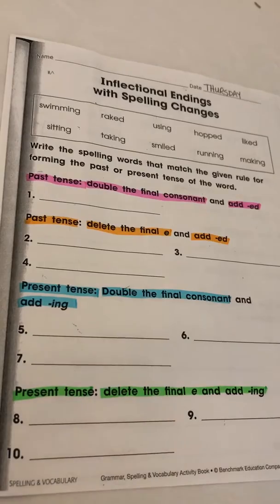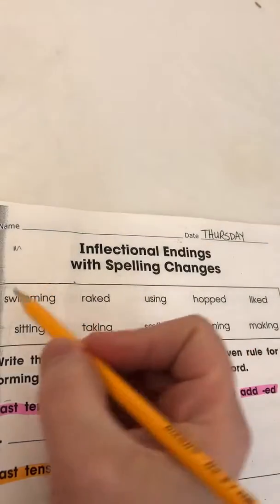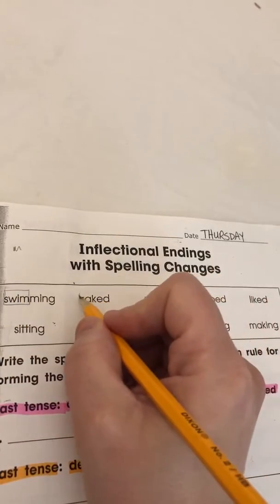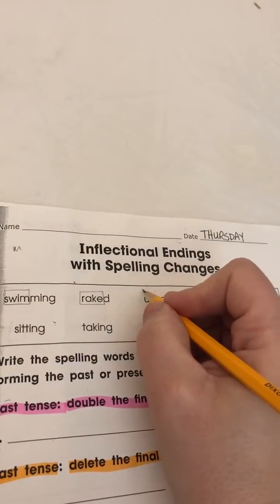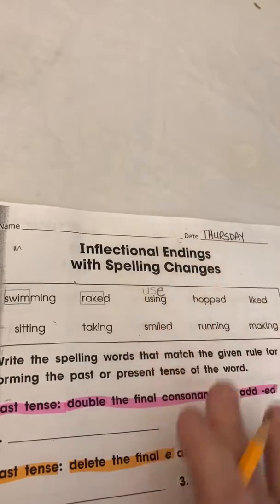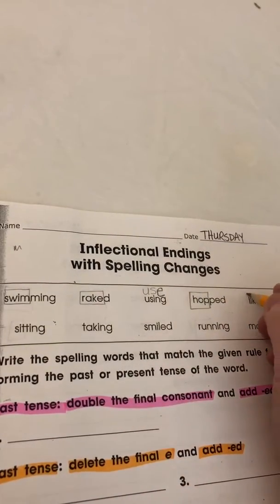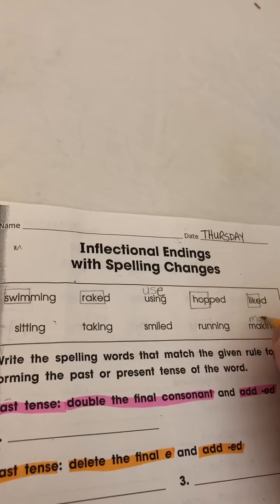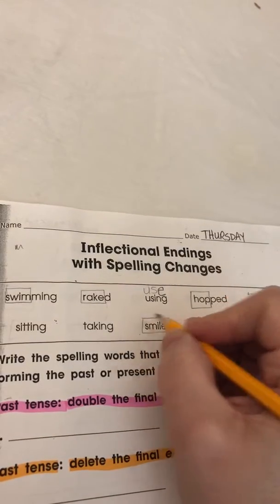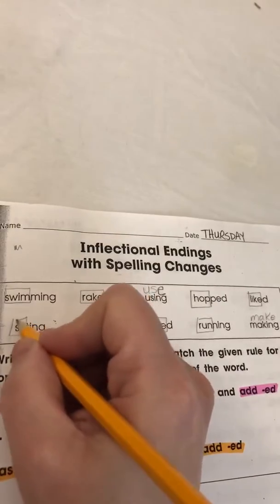What is helpful during this is to look at these words and figure out what the root word is. So I'm just going to box the root words. Swim. Rake. Use — I use a toothbrush. Hop, which only has one P. Like. Make. Run. Smile — that E is part of smile, it's got that magic E. Take. And then last we have sit.